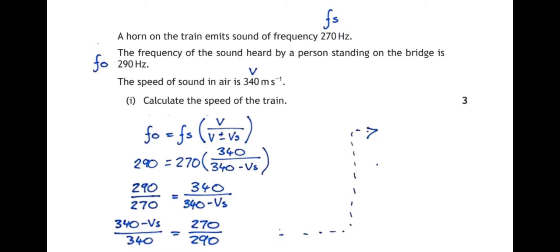And what am I going to do next? Well, I'm dividing by 340 on the left hand side. I don't want to be dividing by 340, so I'm going to multiply by 340 on the other side to get rid of it. So I now have 340 minus VS equals 270 over 290 times 340.